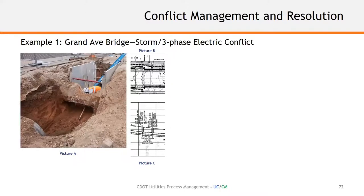We had made an assumption on the bottom elevation of that three-phase electrical. During construction, as you can see, they opened it up and started to install the 24-inch RCP on grade. As they approached and cleared the bottom elevation of that three-phase electrical, it was much deeper and created a conflict during construction, which posed a real problem with our progress on the pipe install. The three-phase electrical that fed the entire downtown area in Glenwood Springs needed to stay in place and keep the businesses open.